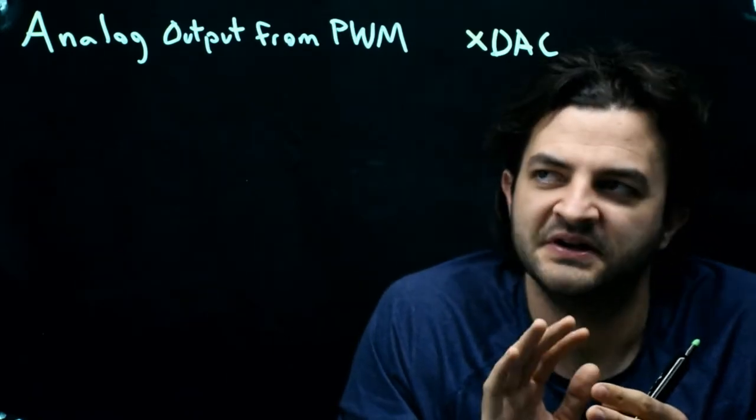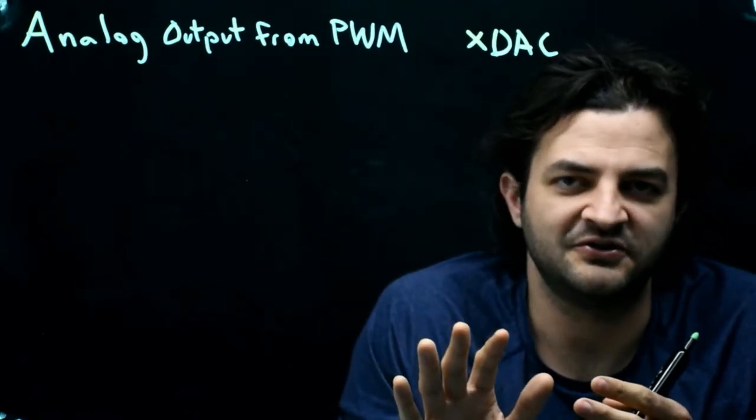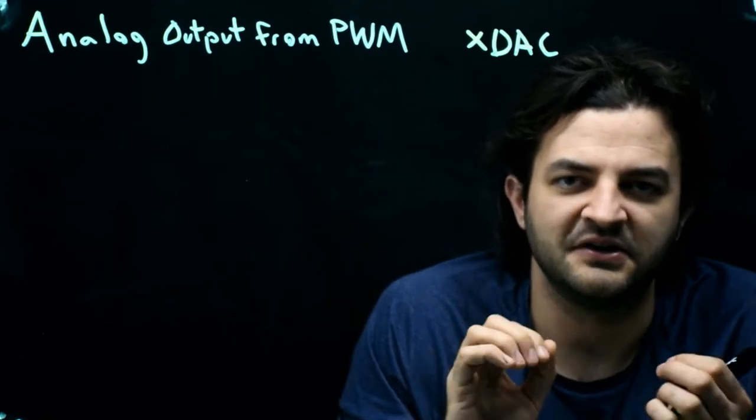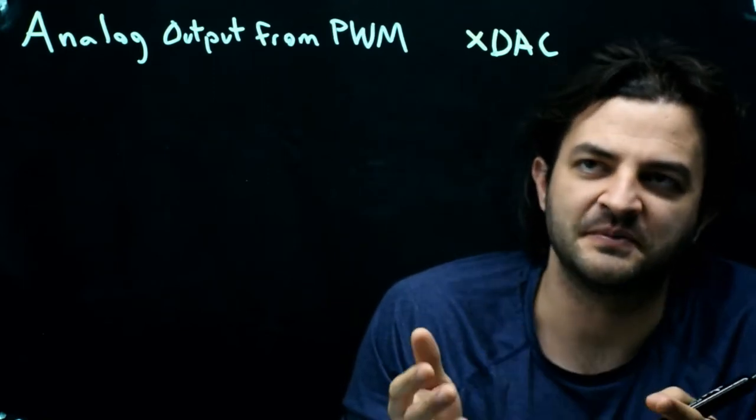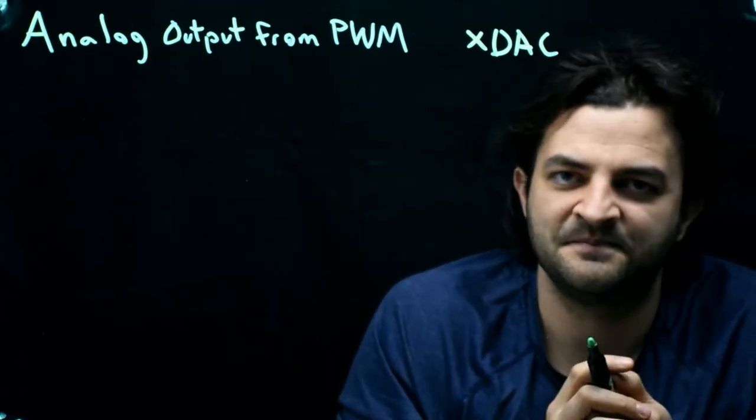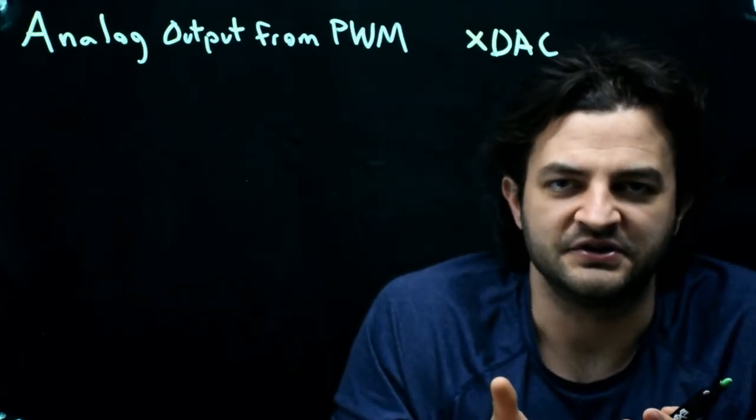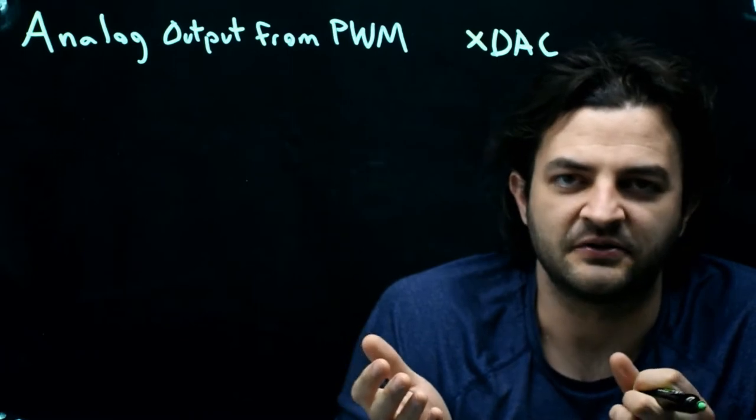That's not quite true. The PIC actually does have two pins that can output analog voltages, but they're for a specific use. They're not general purpose for just making any old voltage. So how can we make a voltage using this PIC32?